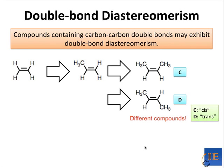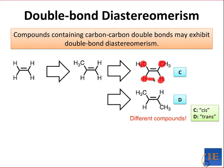In fact, this is such a common example that chemists have given these special names. C is called the cis compound because the two methyl groups — or the two hydrogens, depending on how you look at it — are on the same side of the double bond. D is called the trans compound because the methyl groups are now across the double bond from each other, and the same is true for the hydrogens.